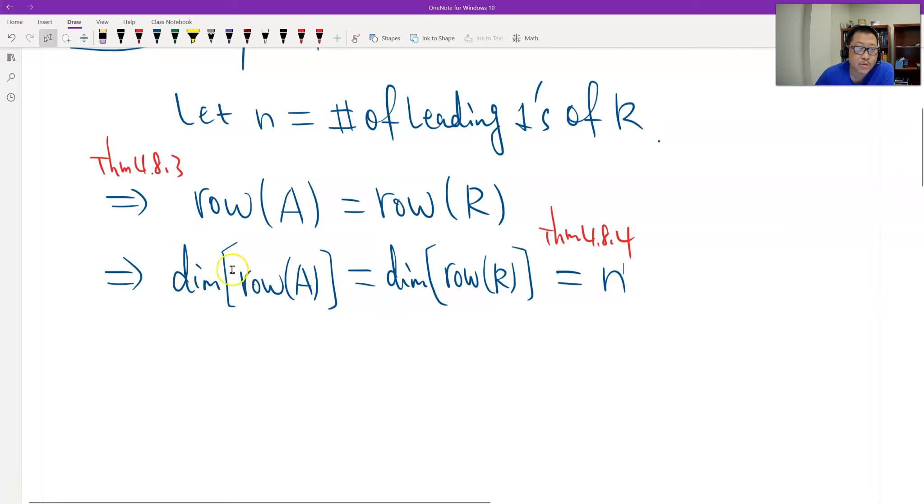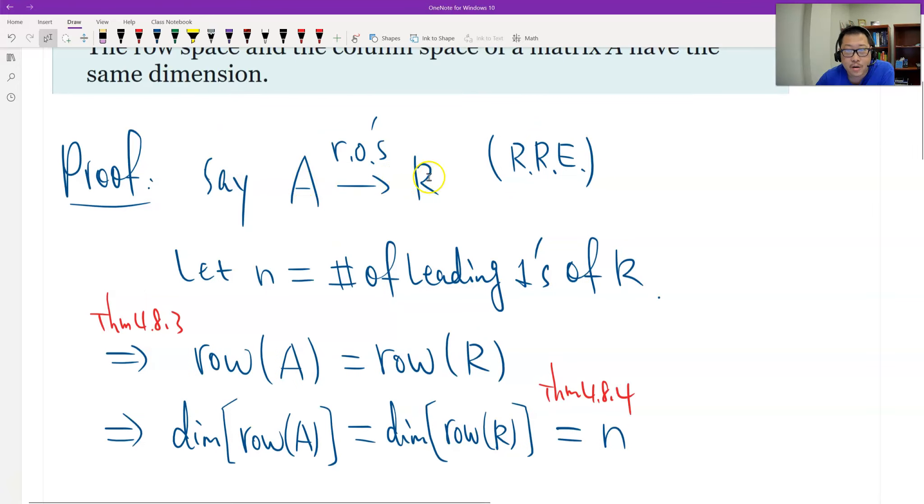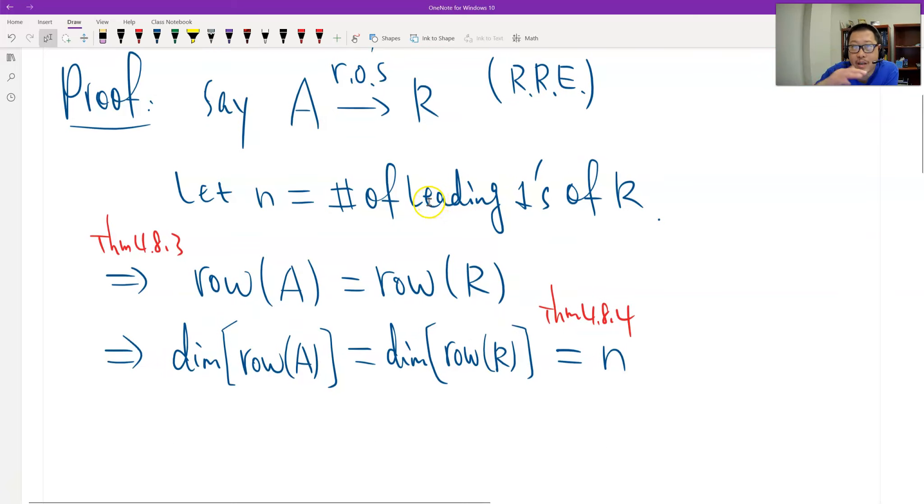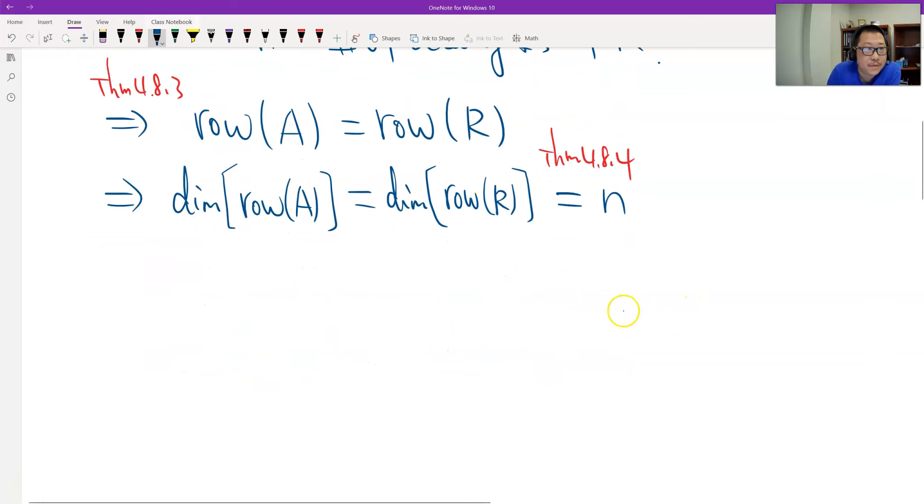And so now we find the dimension of the row space and do the same way. We can find the dimension of the column space also equals n. Column space. And we have another result: row operation, A equals to R by a row operation. Row operation would not change the linear relationship between the columns. Therefore, it would not change the dimension of the column space.